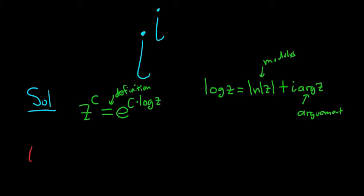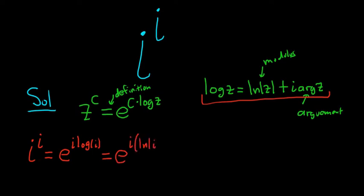So we have i to the i. That's equal to e to the i log i. This is equal to, so now we can use the definition of the complex logarithm. This is e to the i times the natural log of the modulus of i, plus i times the argument of i.